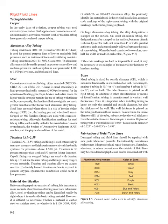Size: metal tubing is sized by outside diameter (OD), which is measured fractionally in sixteenths of an inch. For example, number 6 tubing is 6/16 of an inch, or 3/8 of an inch, and number 8 tubing is 8/16 of an inch, or 1/2 an inch. The tube diameter is printed on all rigid tubing. Tubing is manufactured in various wall thicknesses, so it is important when installing tubing to know not only the material and outside diameter, but also the thickness of the wall. The wall thickness is printed on the tubing in thousandths of an inch.